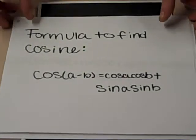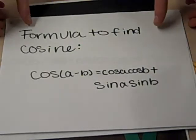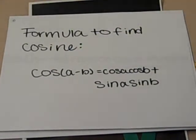Define cosine and sine of these degrees. First, let's find cosine. The formula to find cosine is cosine A cosine B plus sine A sine B.